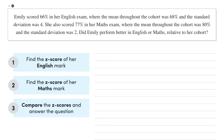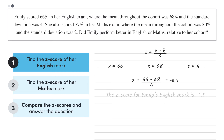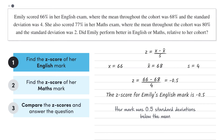Let's calculate her Z-score for English first. Emily's score was 66, so X equals 66. The mean, X-bar, was 68, and the standard deviation, S, was 4. Putting this information into the formula, we get the Z-score to be negative 0.5. This means that Emily's mark was 0.5 standard deviations below the mean.